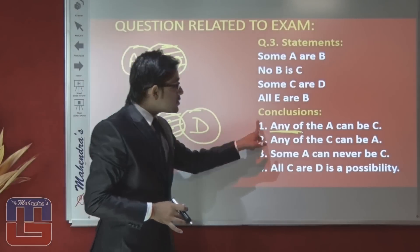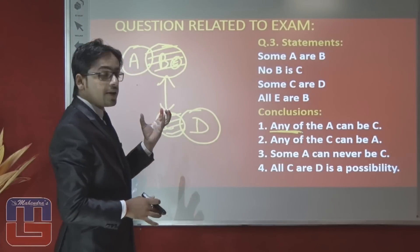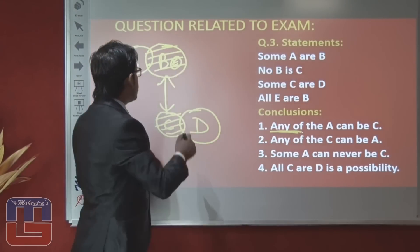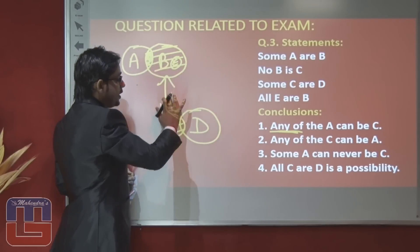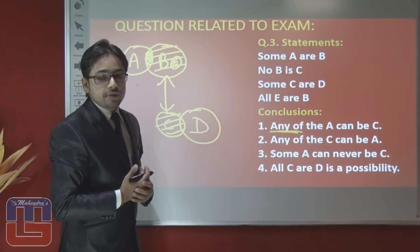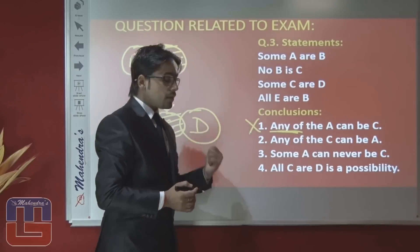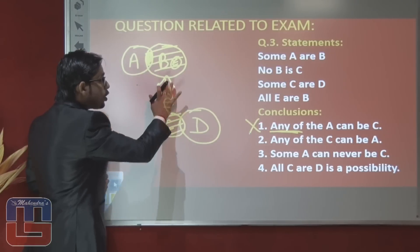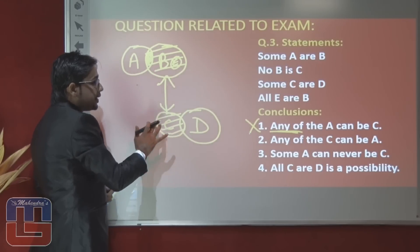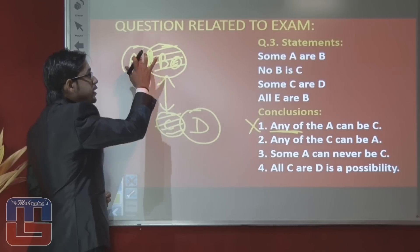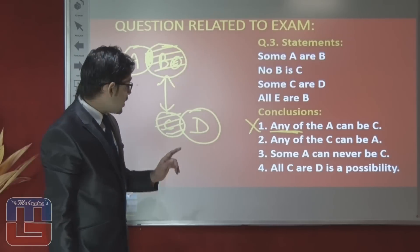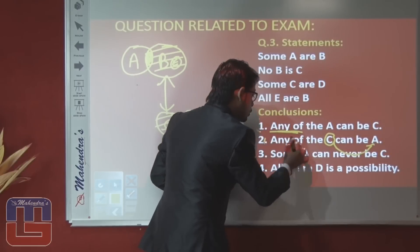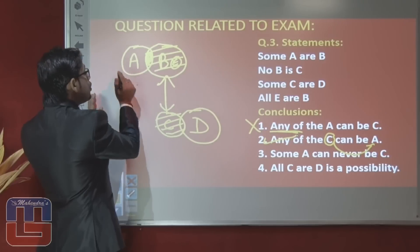Conclusion 2: 'Any of the C can be A' — if it were written 'some A can be C,' the answer would be true because this area can go in the area of C. But they are asking 'all A can be C' — some A are already definitely not C, so that's false. For 'any of the C can be A': all C are not B, and we cannot relate C to A — we have definite information regarding A to C but no information regarding C to A, so all possible cases are true — this possibility is true.